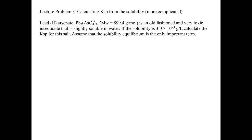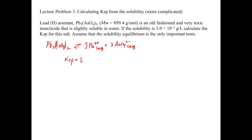We start with the same setup: write the equilibrium expression. Pb₃(AsO₄)₂ solid goes back and forth with 3 Pb²⁺ plus 2 AsO₄³⁻. Then we write the Ksp expression: Ksp equals [Pb²⁺]³ times [AsO₄³⁻]², bringing down the stoichiometric coefficients as exponents.